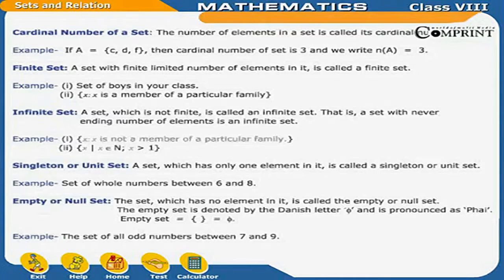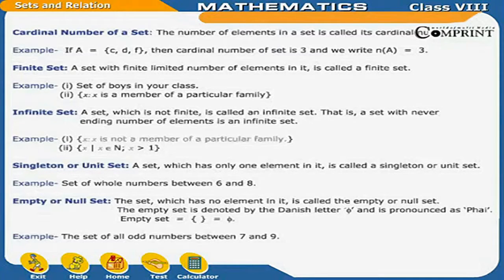Singleton or unit set: a set which has only one element in it is called a singleton or unit set. Example: the set of whole numbers between 6 and 8. Empty or null set: the set which has no element in it is called the empty or null set, denoted by the Danish letter phi (φ). Example: the set of all odd numbers between 7 and 9.